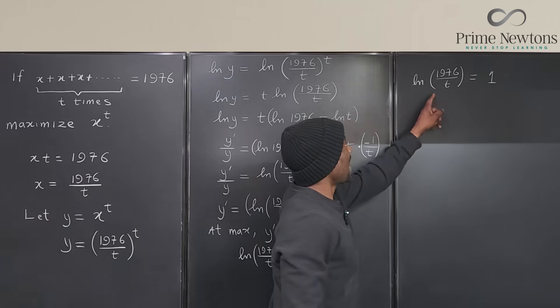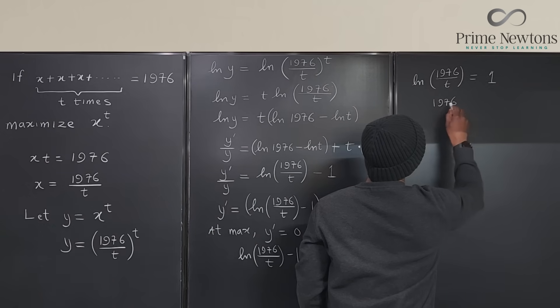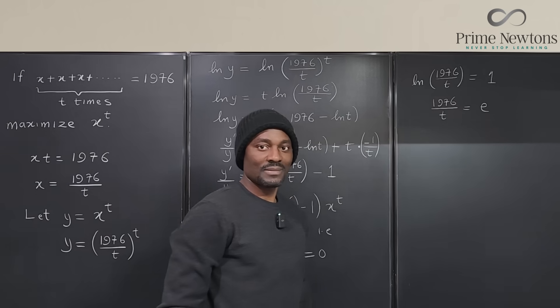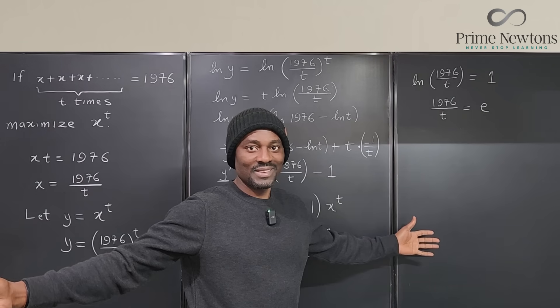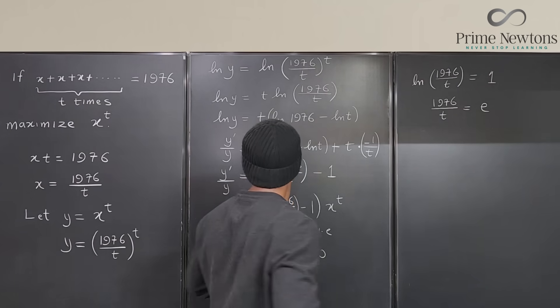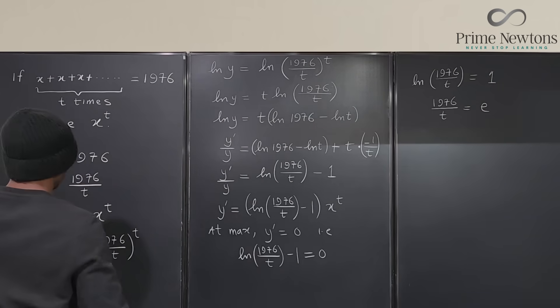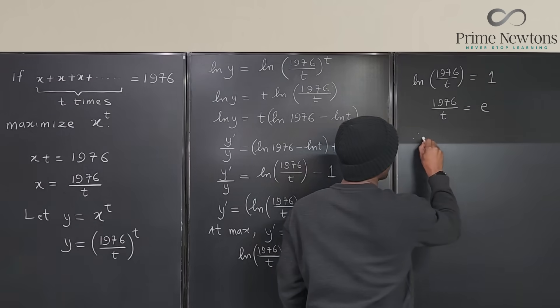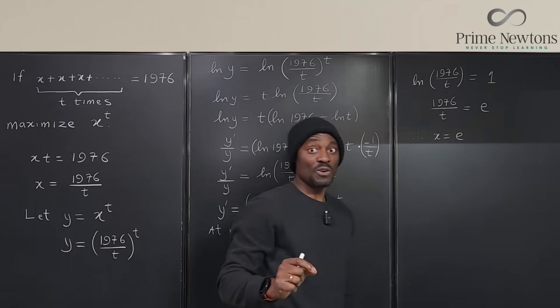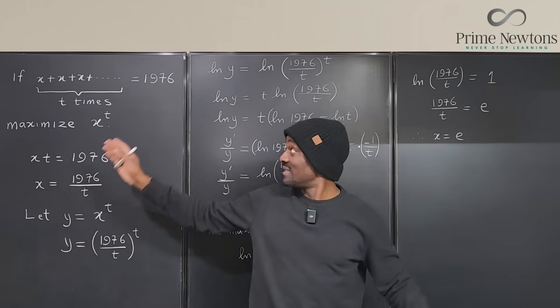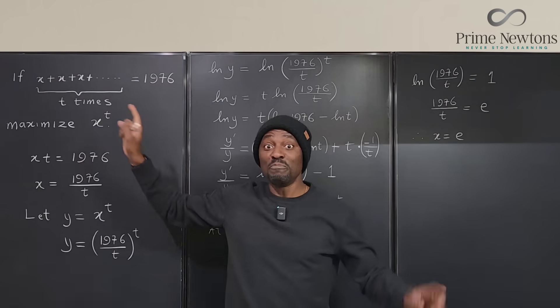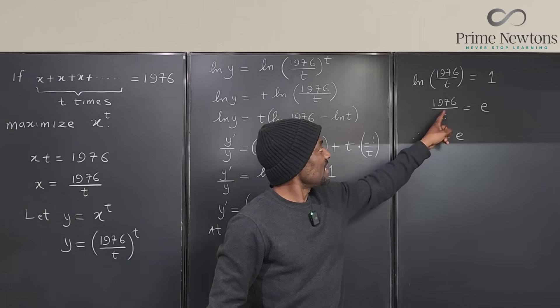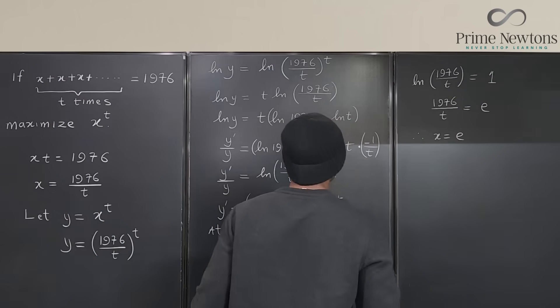If you take the E of both sides you're going to end up with 1976 over T is equal to E. That's it. So that tells you that X, this X which is 1976 over T, is E. So therefore X equals E. So the value of X that maximizes this number that we're trying to get here must be E.